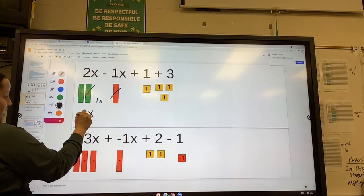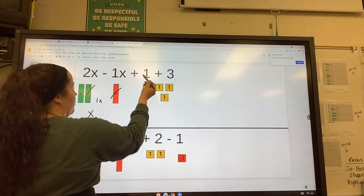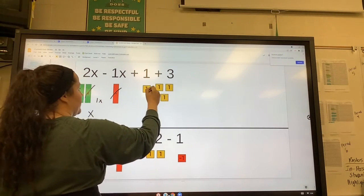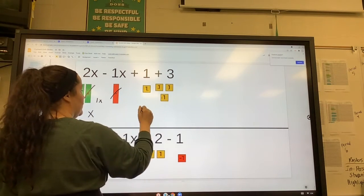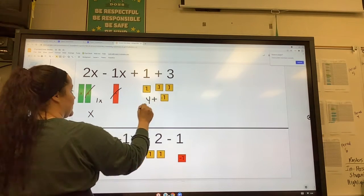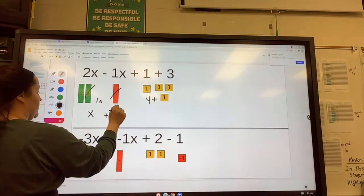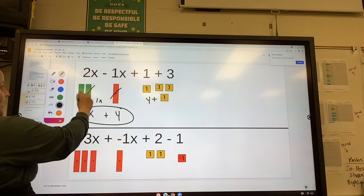And then we have a positive 1 and a positive 3. So that's 1, 2, 3, 4. So it's 4 positives or plus 4. So that is x plus 4.